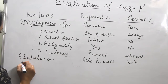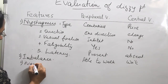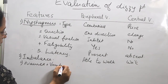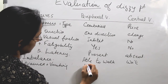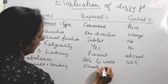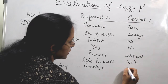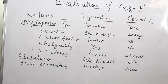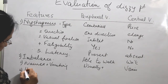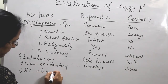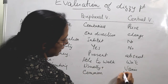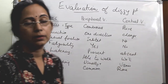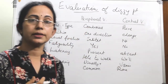There will usually be nausea and vomiting associated with peripheral causes, but it may or may not be present in case of central cause. And hearing loss and tinnitus is more common with the peripheral variety, but it is rare in case of central vertigo.